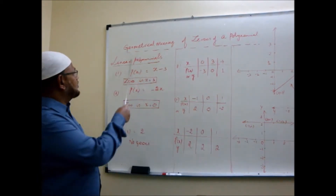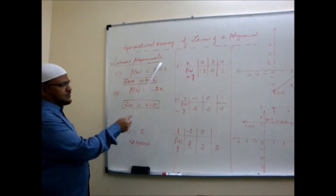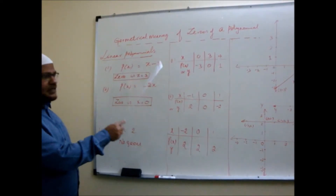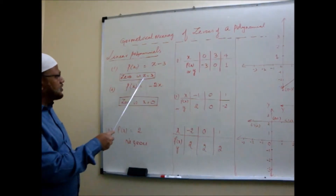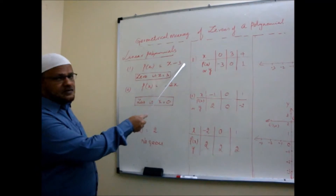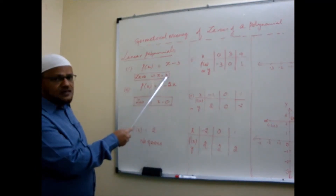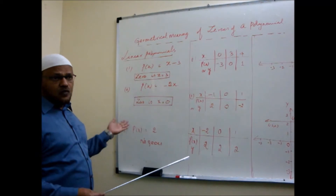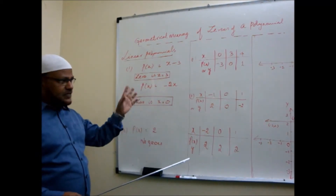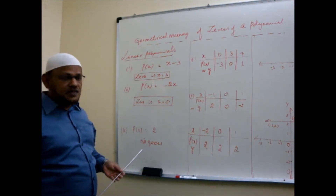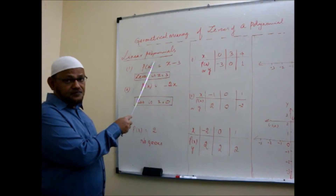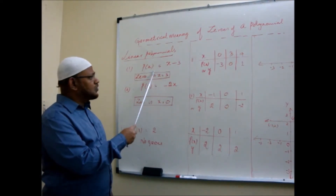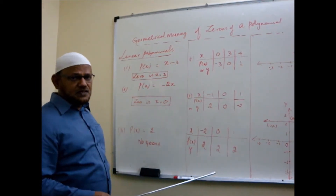I will give some examples — all linear polynomials. I take this polynomial p(x) = x - 3. We know that its zero is x = 3. If I put x = 3, this whole thing will become zero. To interpret it geometrically, we are going to draw a graph of it. We know y equals some function of x, then we draw the graph in the xy-plane — our Cartesian plane.